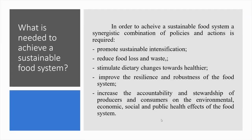To achieve a sustainable food system, a synergistic combination of policies and actions is required: promote sustainable intensification and scale up agroecological approaches; reduce food loss and waste while encouraging reuse and recycling; stimulate dietary changes towards healthier, less resource-intensive, more plant-based diets; improve the resilience and robustness of the food system by diversification to cope with geopolitical shocks and climate change effects; and increase the accountability and stewardship of producers and consumers through participatory policy development, increasing transparency, training, education and improving labeling to better inform consumer choices.